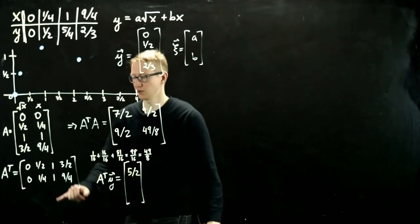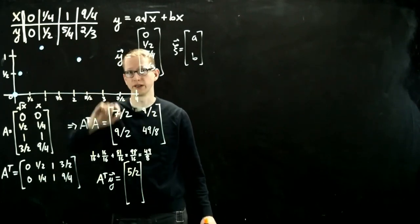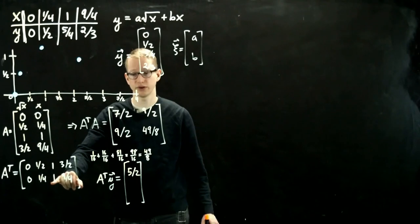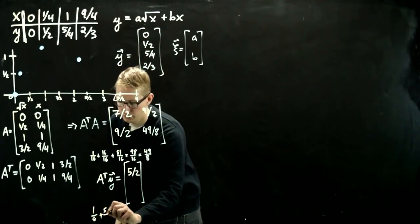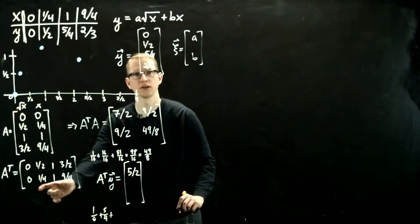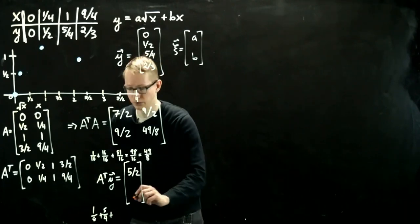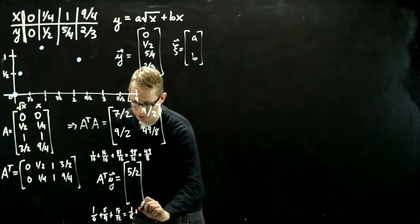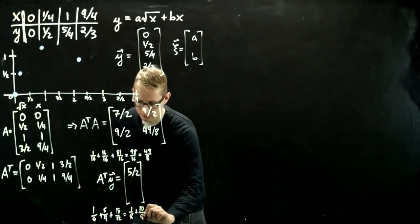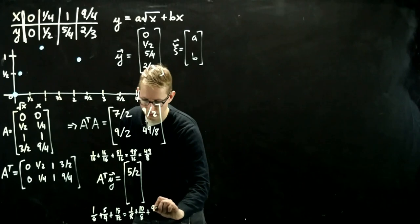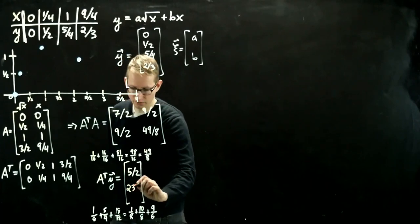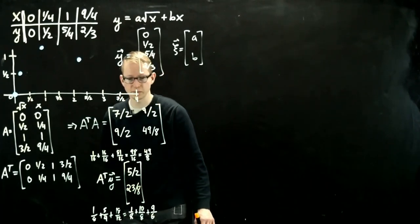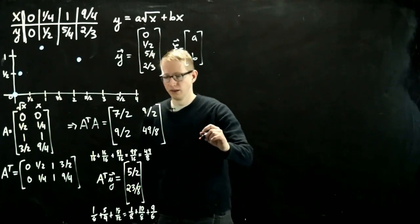And then the second entry is 1 eighth plus 5 fourths, 1 eighth plus 5 fourths, plus 18 over 12. This is 1 eighth plus 10 eighths, plus 9 over 6, 23 over 8. Okay.